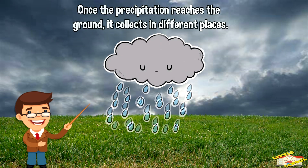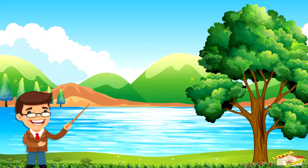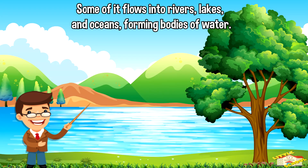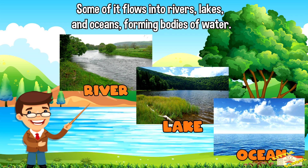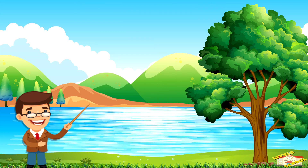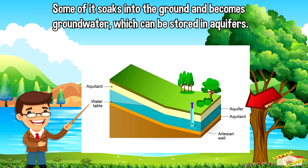Collection. Once precipitation reaches the ground, it collects in different places. Some of it flows into rivers, lakes, and oceans, forming bodies of water. Some of it soaks into the ground and becomes groundwater, which can be stored in aquifers.